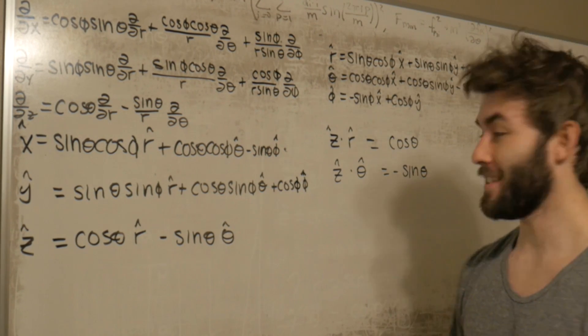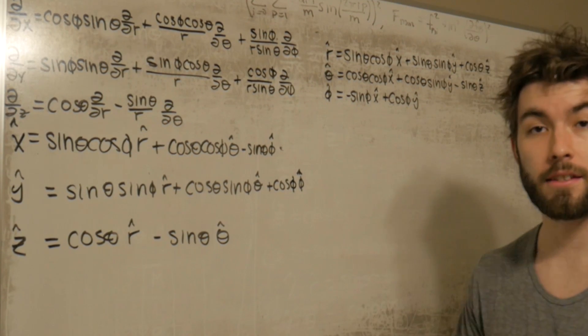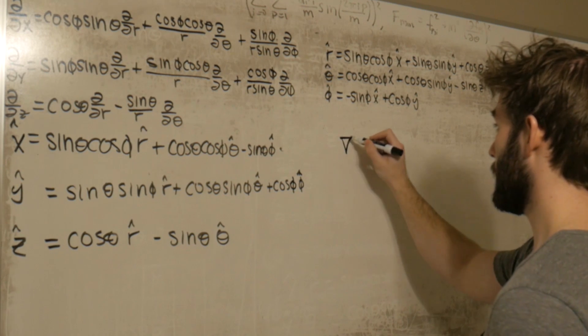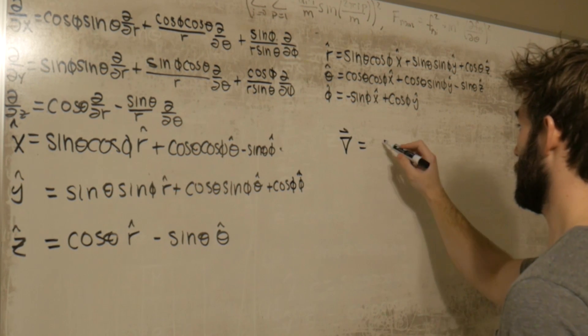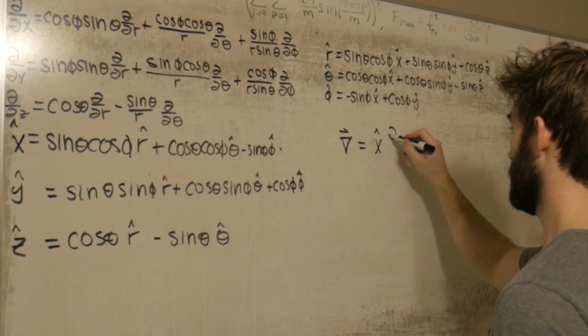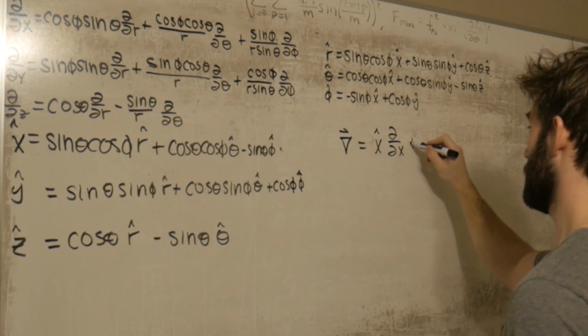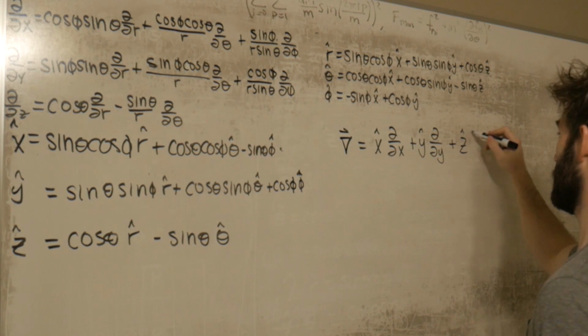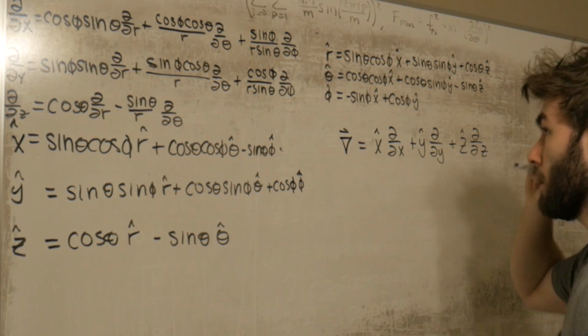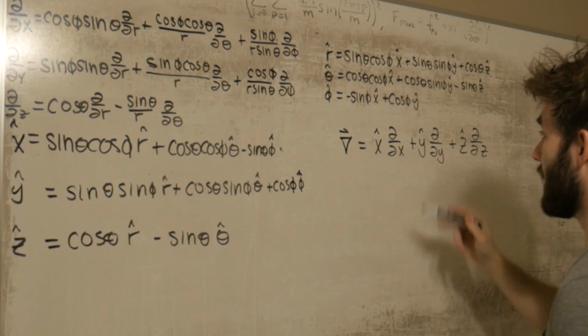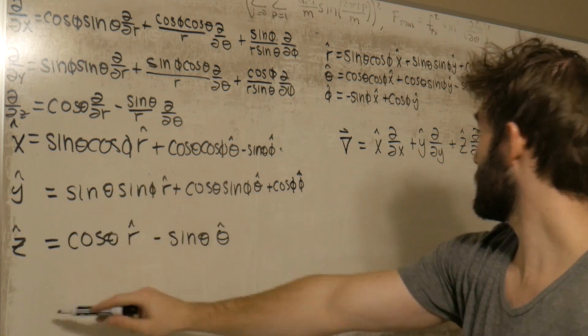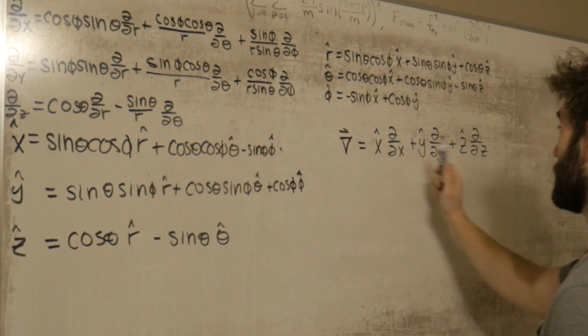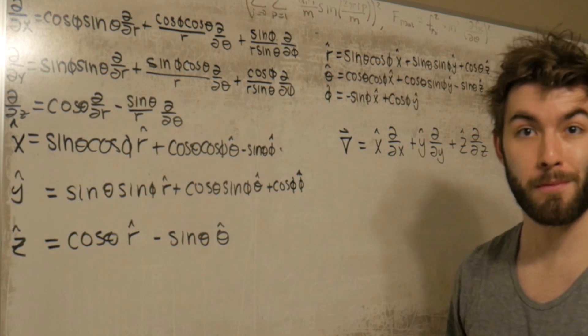Now we're almost done. We're getting there. Now the next and last step is actually to just take the definition of the gradient operator in Cartesian coordinates. We can define the gradient equal to x hat d/dx plus y hat d/dy plus z hat d/dz. And thankfully, we have all the pieces to do this. We have our x hat, y hat, and z hat here. And we have our d/dx, d/dy, and d/dz here. And what we're going to do is we're just going to multiply them together.